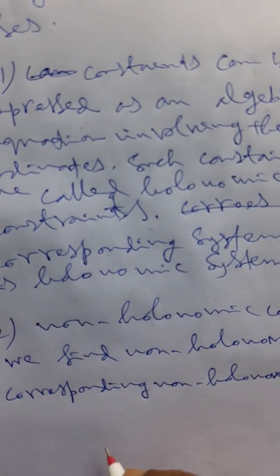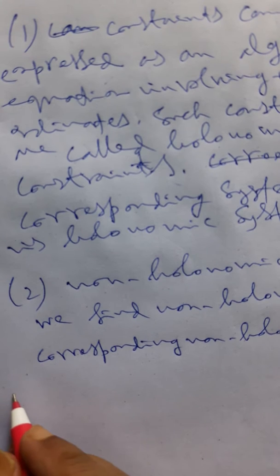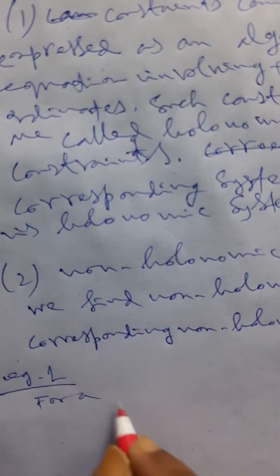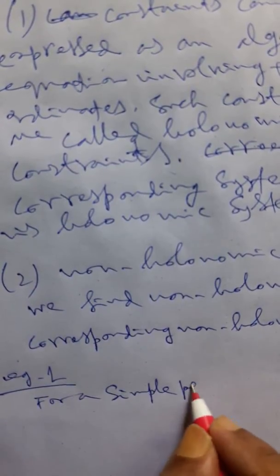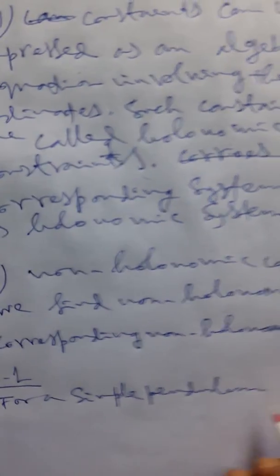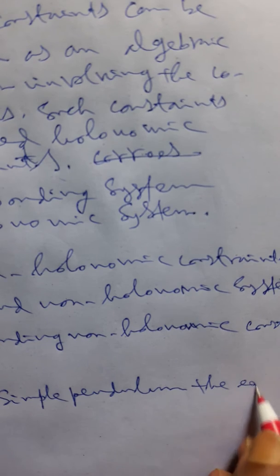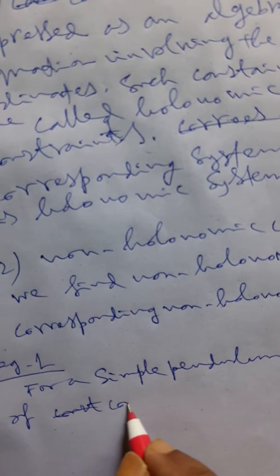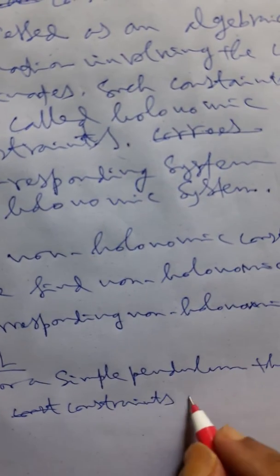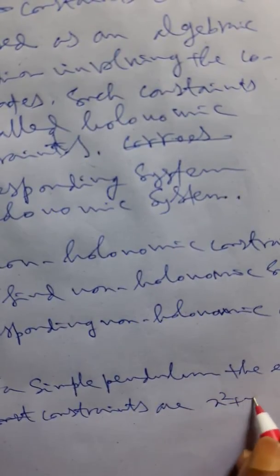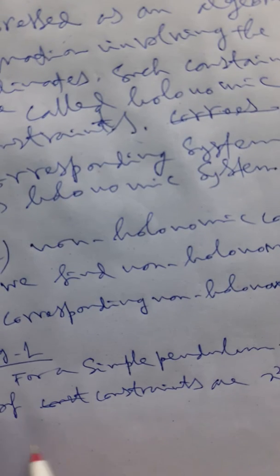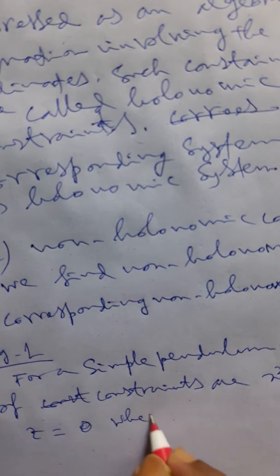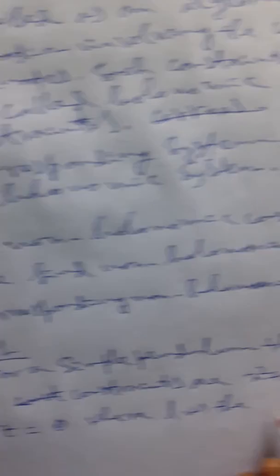Now let us define and let us explain with the help of some examples. For example one, we consider for a simple pendulum, the equation of constraints are x square plus y square equals to l square and z equals to 0, where l is the length of the string.